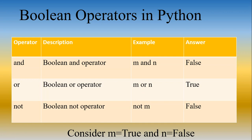The next one is the Boolean or operator. The Boolean or operator returns true if any one of the two values is true; otherwise it returns false. So if both values are true, the or operator will still return true. And if none of the values is true, then the Boolean or operator will return false.